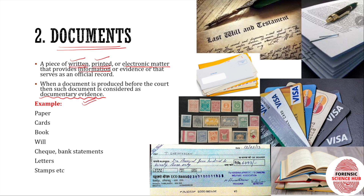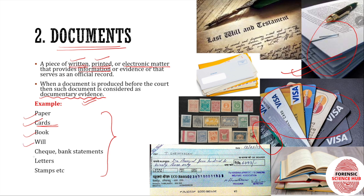Examples of documents include paper, cards such as debit cards, credit cards, PAN cards or any ID card, books, wills, checks, bank statements — all of which have something written on them, such as card numbers, the name of the cardholder, account numbers, and signatures. Letters and stamps also act as documents. When any of these help in a particular case, they become documentary evidence.